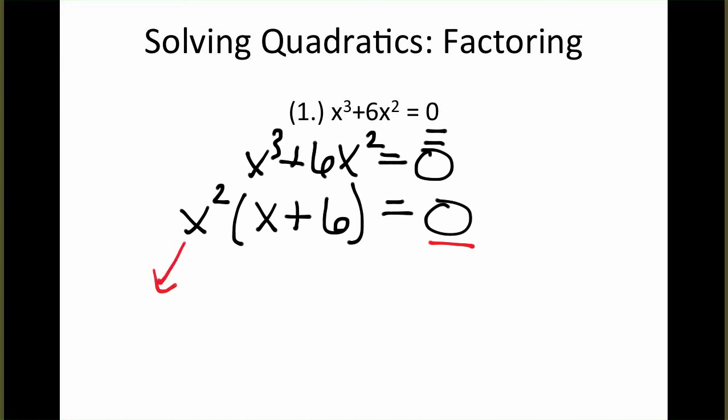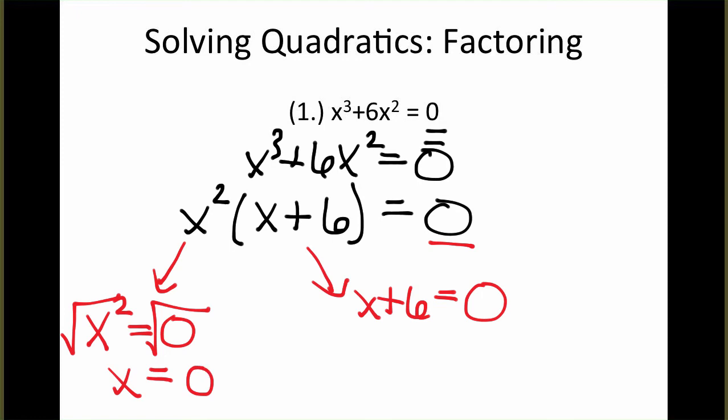So what we have to do is we just have to solve when each factor is equal to zero. Here, when does x squared equal zero? Well, we can take the square root of each side, and the square root of zero is just zero. The second one, when does x plus 6 equal zero? Well, we can subtract 6 from each side, and we get x equals negative 6. So this expression has two solutions, x equals zero, and x equals negative 6.